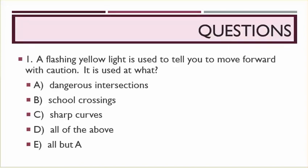E. A flashing yellow light is used to tell you to move forward with caution. It is used at what? A: Dangerous intersections. B: School crossings. C: Sharp curves. D: All of the above. E: All but A.